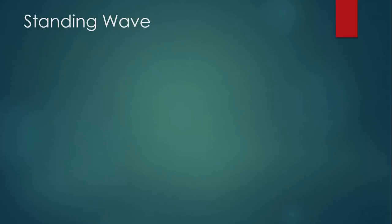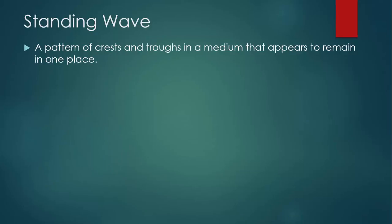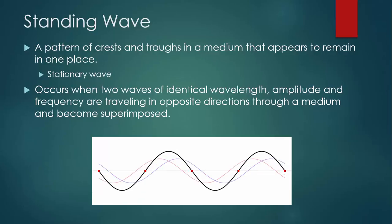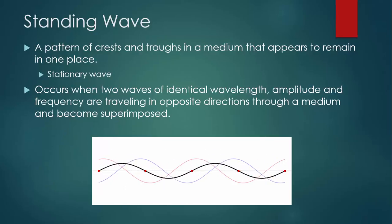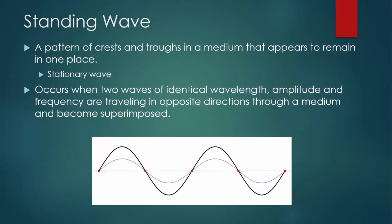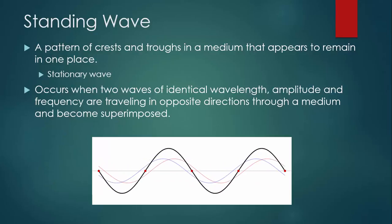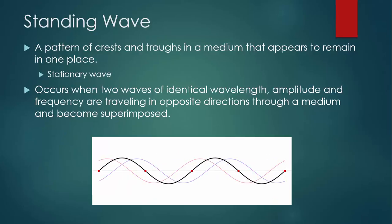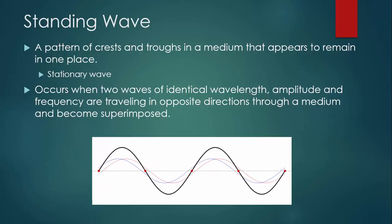There are a couple of phenomena that can happen when two waves interfere. The first is called a standing wave — a pattern of crests and troughs in a medium that appears to remain in one place, sometimes described as a stationary wave. This occurs when two waves of identical wavelength, amplitude, and frequency travel in opposite directions through a medium and become superimposed. In the animation, the red wave travels to the left and the blue wave travels to the right; the black wave is the standing wave. Certain points — those red dots — experience maximum destructive interference at all times, always completely canceling each other out. We call these places nodes.